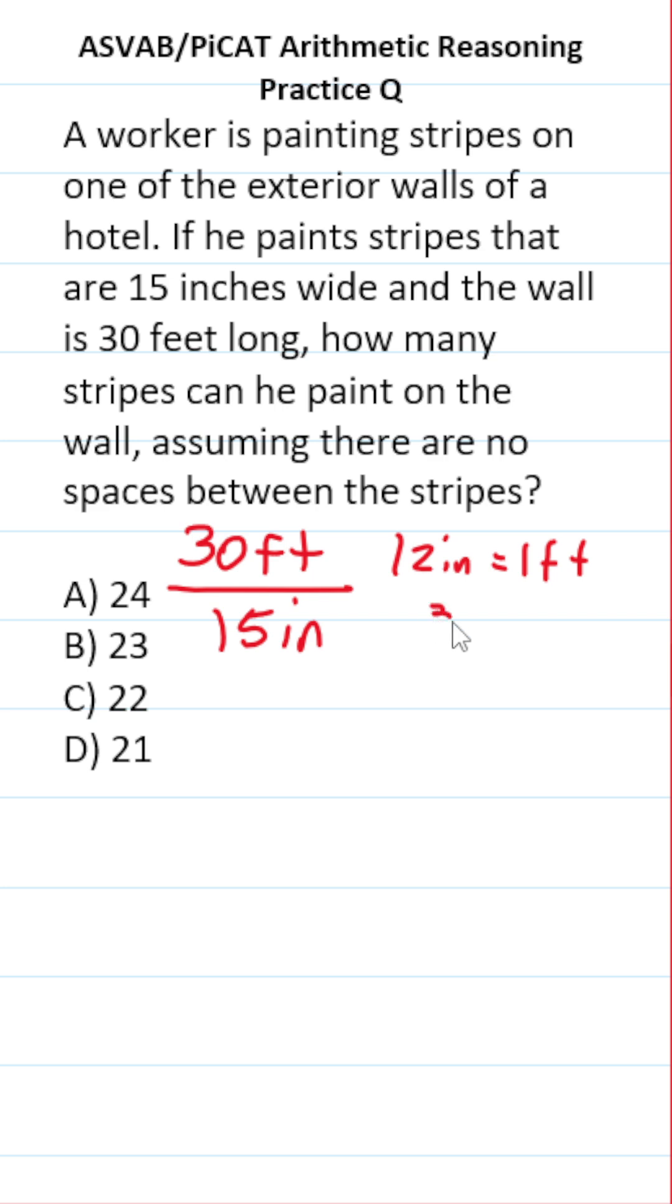So I'm going to do 30 times 12 very quickly. 0 times 2 is 0, 3 times 2 is 6, add a 0 placeholder. 1 times 0 is 0, 3 times 1 is 3. So we can see that 30 feet is the same thing as 360 inches,